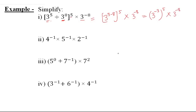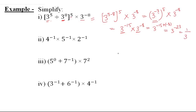Now we have exponent of exponent, so we multiply: negative 3 times 5 gives negative 15. So we get 3 raise to the power negative 15 multiplied by 3 raise to the power negative 8. The bases are the same and it's multiplication, so we add the powers: 3 raise to the power negative 15 plus negative 8, which equals 3 raise to the power negative 23. We can write this as 1 upon 3 raise to the power 23, moving it to the denominator makes the exponent positive.